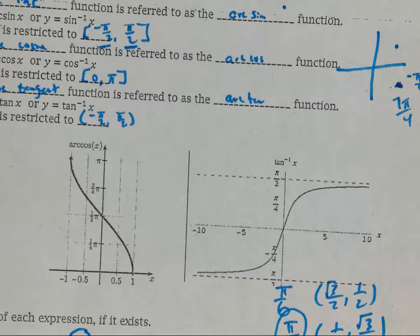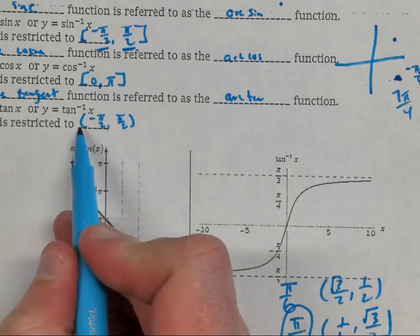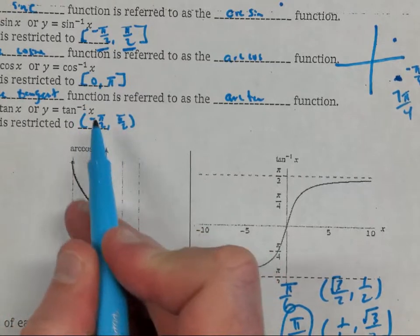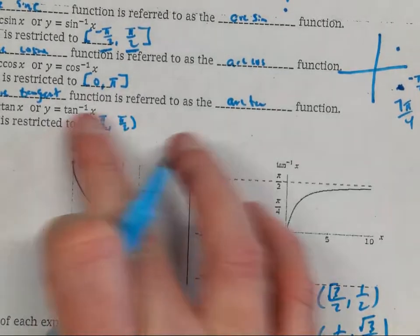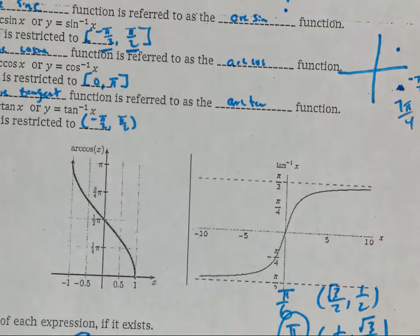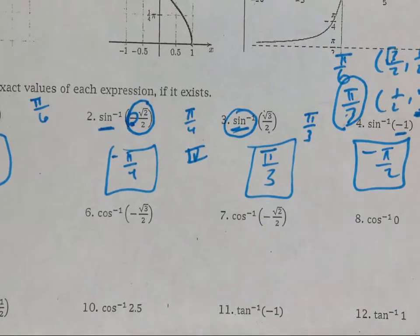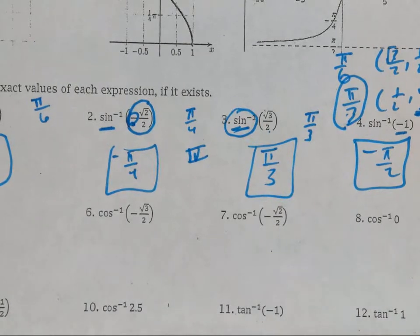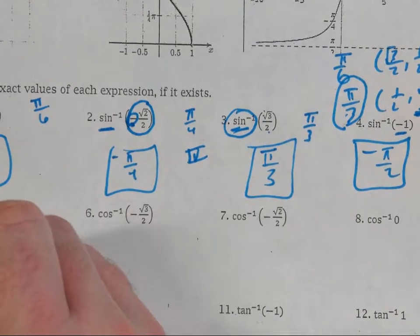What if that were a tangent instead? Well, I couldn't do it for tangent — it would be 'does not exist,' because parentheses around the tangent endpoints mean those two numbers cannot be the answer. Number five: three is not a value anywhere on the unit circle, so this does not exist.